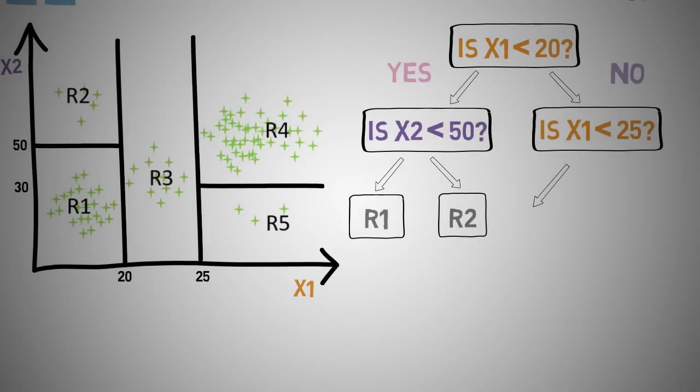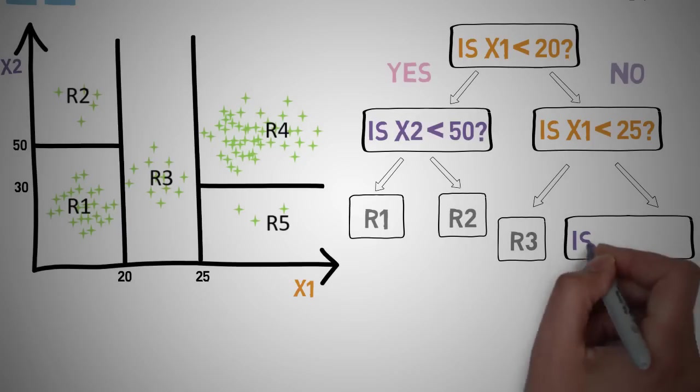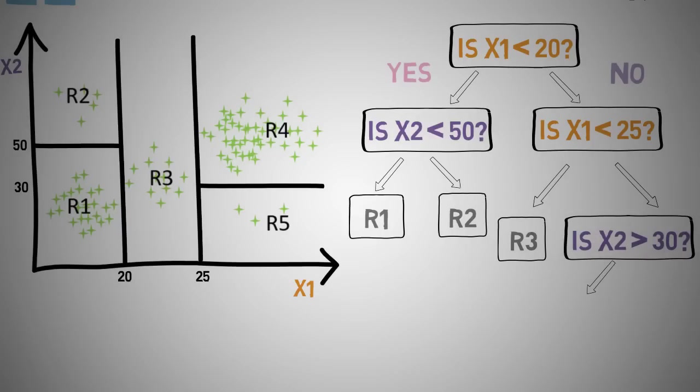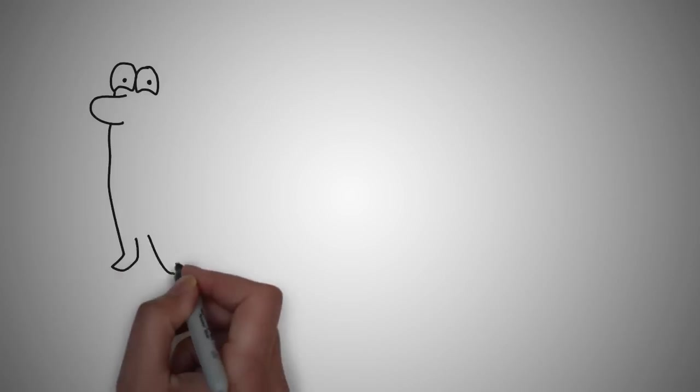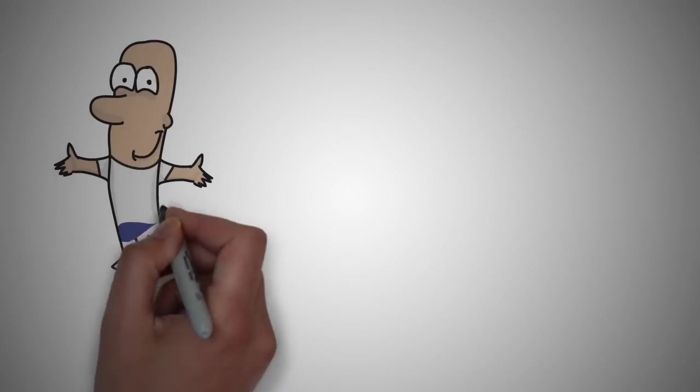Then we go to our other branch and we ask: is x1 less than 25? If it's less than 25, if yes, then it's R3. If no, then we ask ourselves: is x2 less than 30? If yes, we got R5, and if no, we got R4. As you can see, that is really simple.